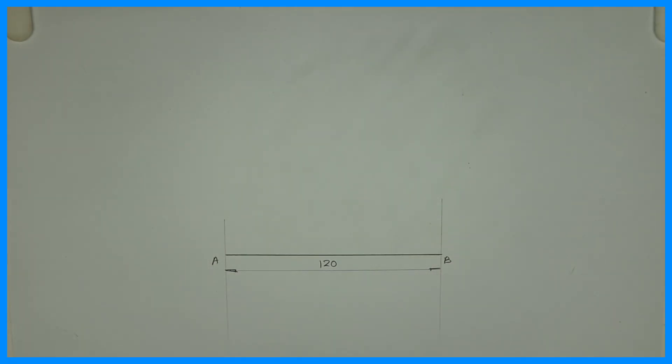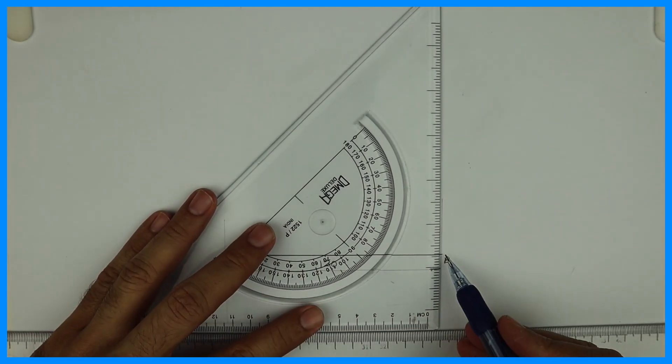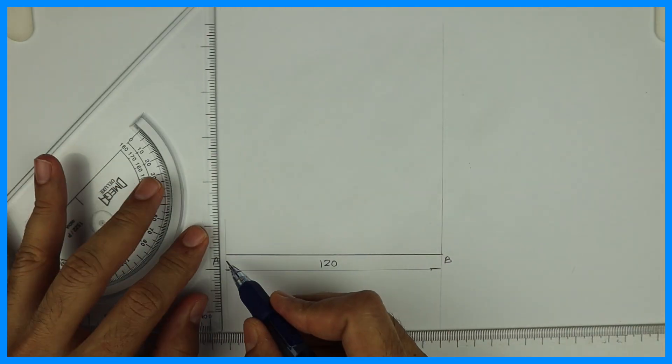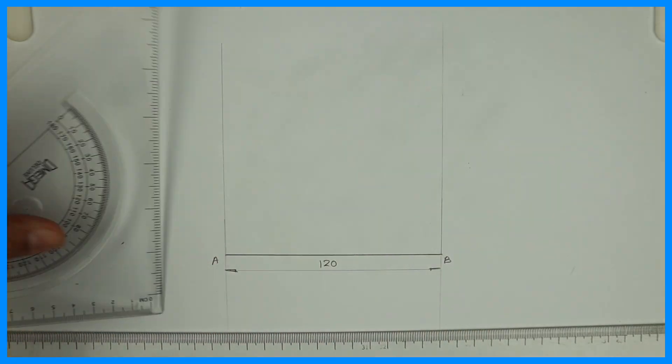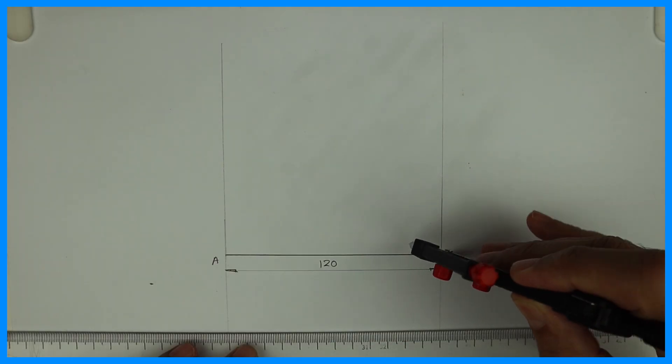This is side AB. After that I will drop perpendicular from B with T square, as well as from A. You can use protractor also. And then you can cut side 120 on it. See this. You take B to A.